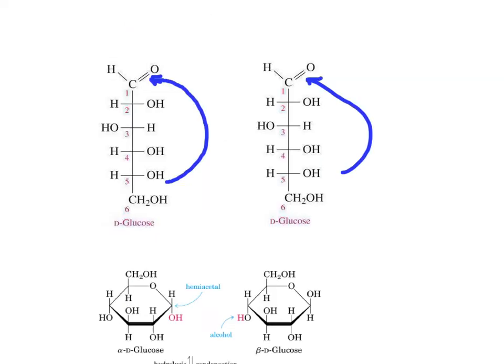The first disaccharide to be discussed is maltose. Maltose is produced by partial hydrolysis of starch by the enzyme amylase. This disaccharide is made of two glucose units.